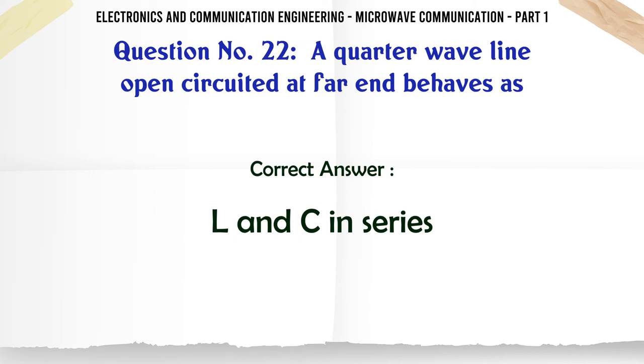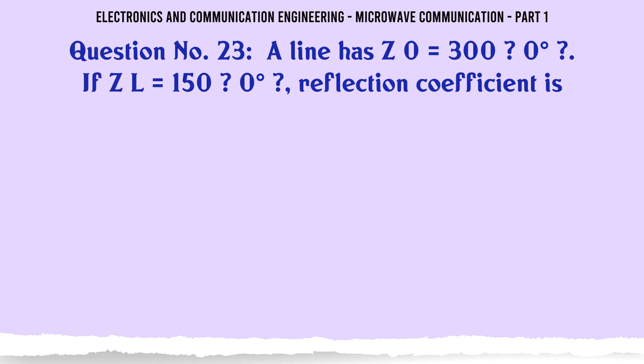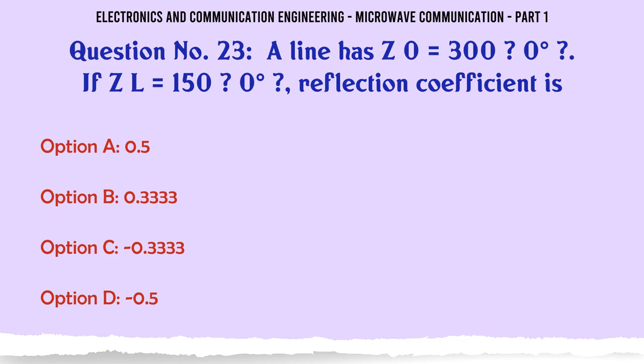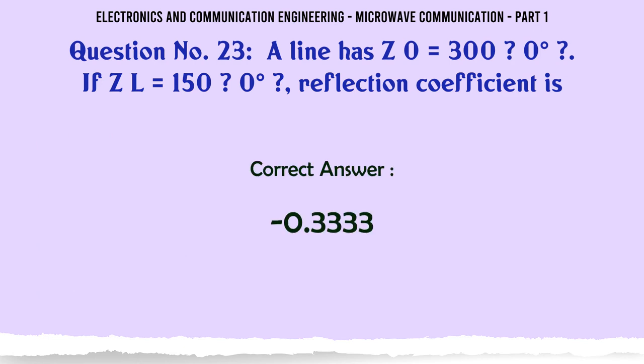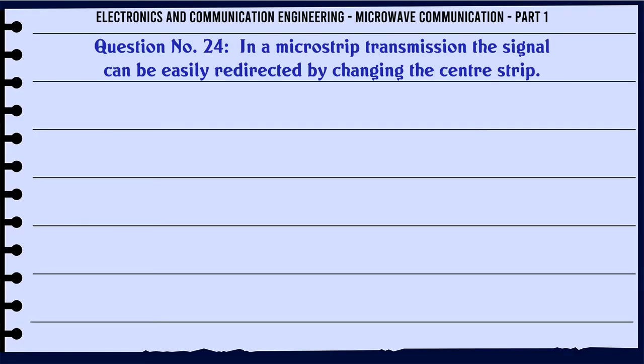A line has Z0 = 300. If ZL = 150, reflection coefficient is: A. 0.5, B. 0.3333, C. -0.3333, D. -0.5. The correct answer is -0.3333.